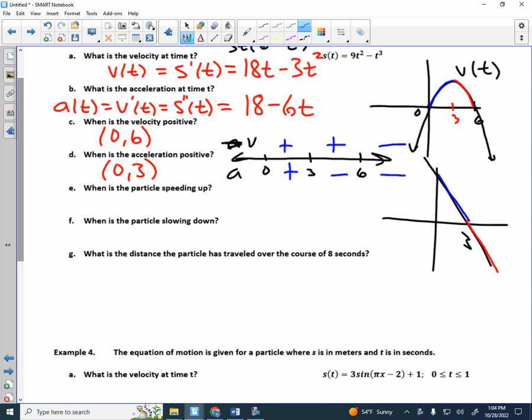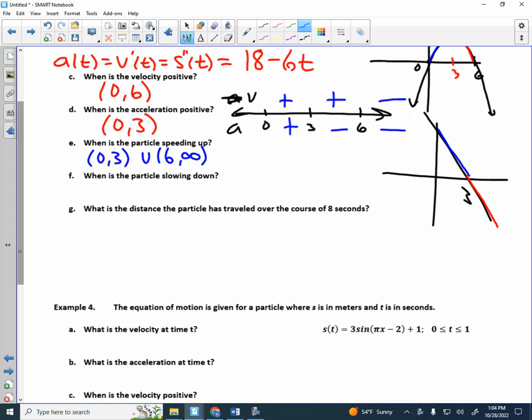So when is the particle speeding up? When the signs are the same. So from 0 to 3 and 6 to infinity. When is the particle slowing down? Yep, 3 to 6. See how I came up with that? That's the new piece for today.